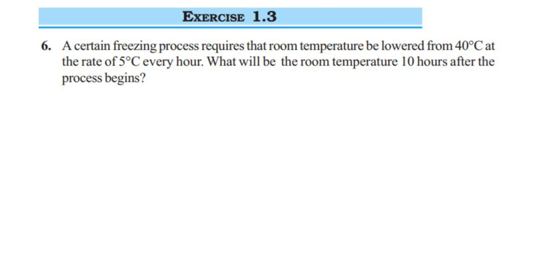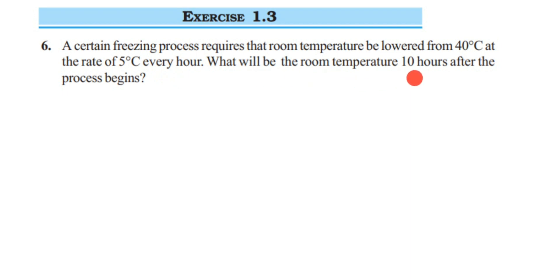Hey everyone, here is exercise 1.36, chapter Integers of Class 7. The question is: a certain phasing process requires that room temperature be lowered from 40 degrees Celsius at the rate of 5 degrees Celsius every hour. What will be the room temperature 10 hours after the process begins?